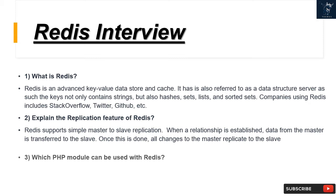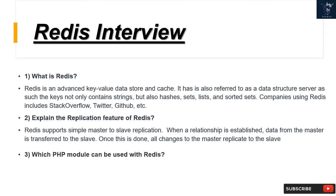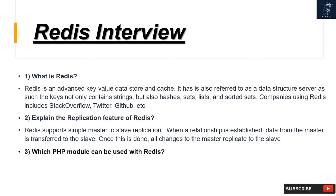Question 2: Explain the replication feature of Redis. Redis supports simple master-to-slave replication. When a relationship is established, data from the master is transferred to the slave. Once this is done, all changes to the master replicate to the slave.